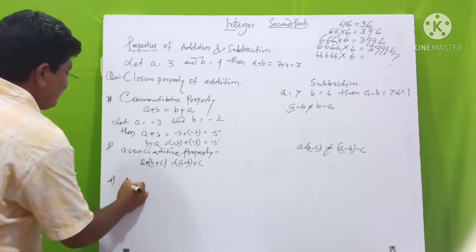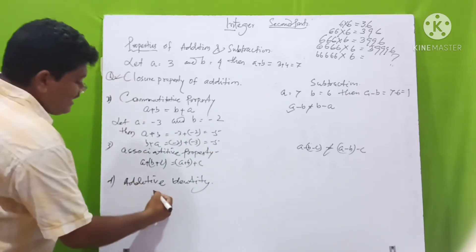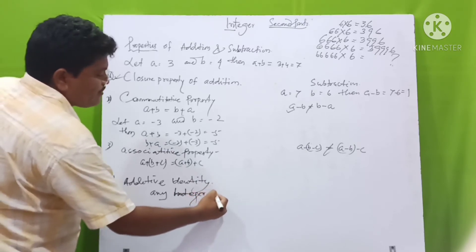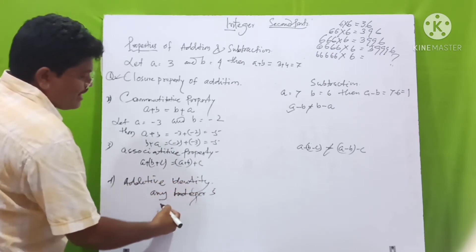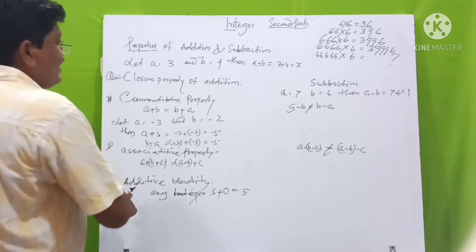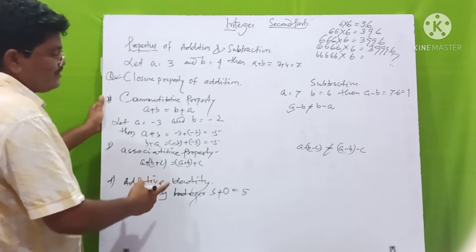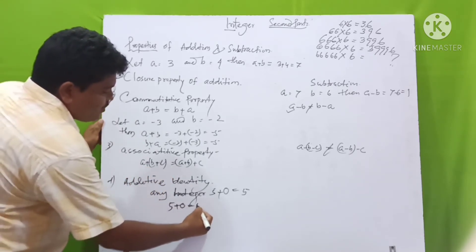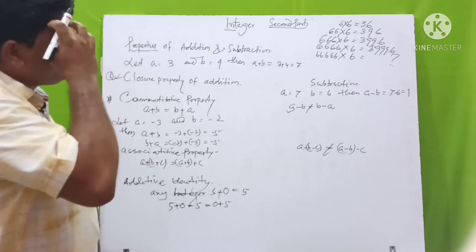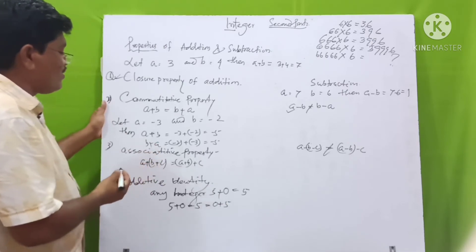Next, take additive identity. If we take any integer, say 5, and add 0, then we get 5. Adding 0 with any integer, we get the same number. So 0 is called the additive identity. 5 + 0 = 5, or 0 + 5 = 5. Any integer added with 0 gives the same number, so 0 is called additive identity.